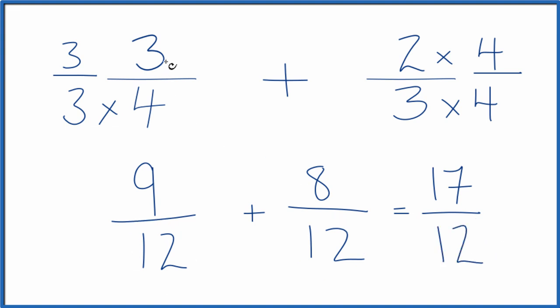So in answer to our question, 3 fourths plus 2 thirds, that equals 17 twelfths.